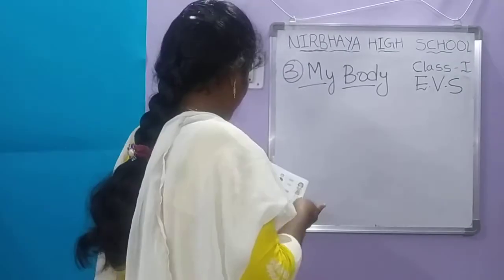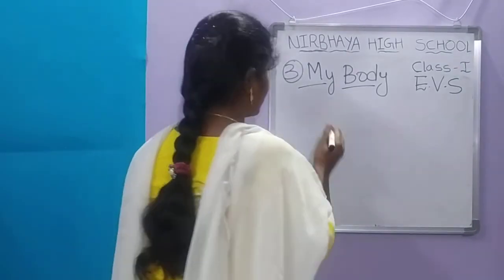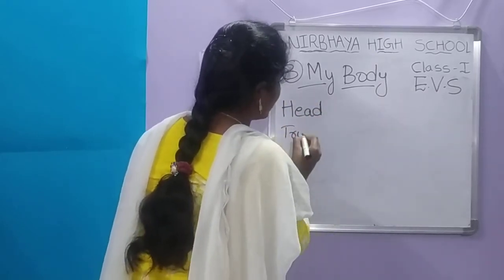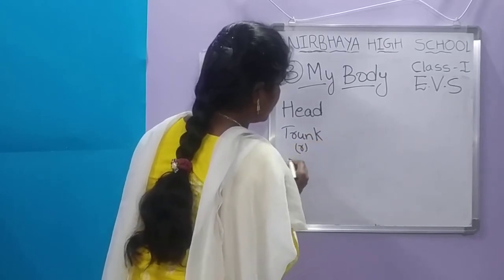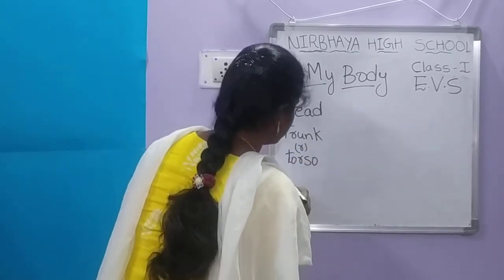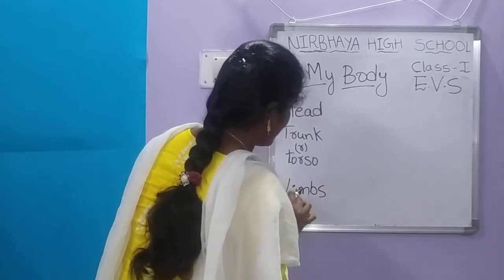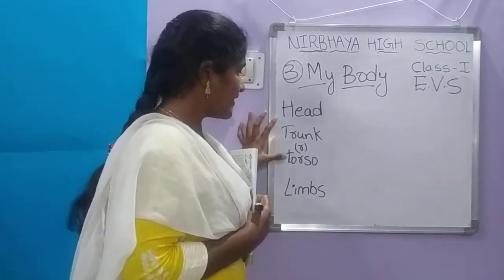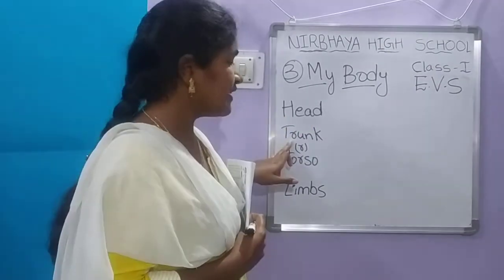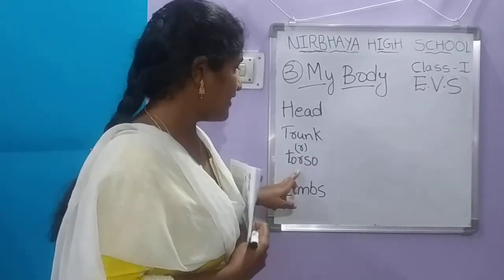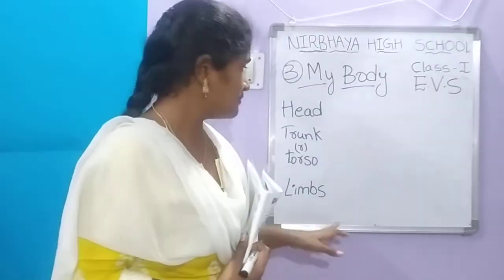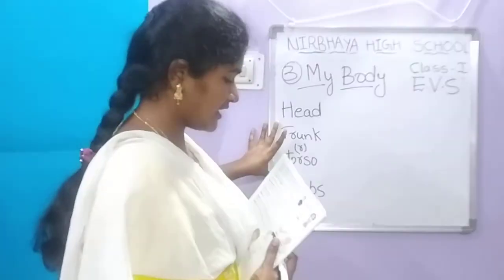Let us see what our three main body parts are: head — H-E-A-D, trunk — T-R-U-N-K — or torso — T-O-R-S-O, and limbs — L-I-M-B-S. These are the three main body parts. Let us read about them.